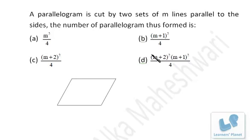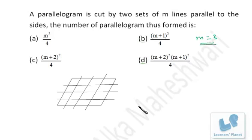You can take any value, but I'm just taking 3. That means I have drawn three lines parallel to the sides, that is parallel to both the sides. I just draw that, so this is the situation.